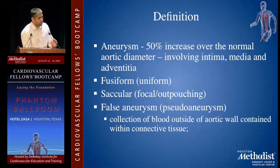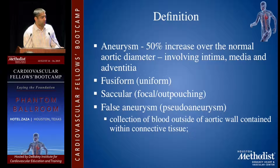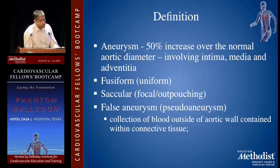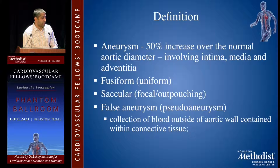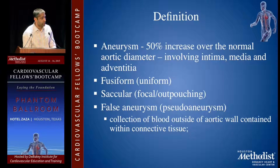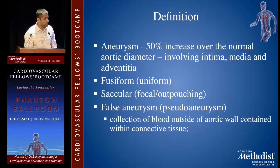An aneurysm is essentially a 50% increase over the normal aortic diameter and involves all three layers: the intima, media, and adventitia. A fusiform aneurysm is a uniform dilation of the entire aorta. A saccular aneurysm is a focal outpouching. A false aneurysm or pseudoaneurysm is a collection of blood outside of the wall contained within the connective tissue.